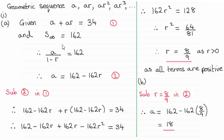And we should know that the sum to infinity is given by this formula a over 1 minus r. So I've put that equal to 162 as we're told that the sum to infinity is 162.